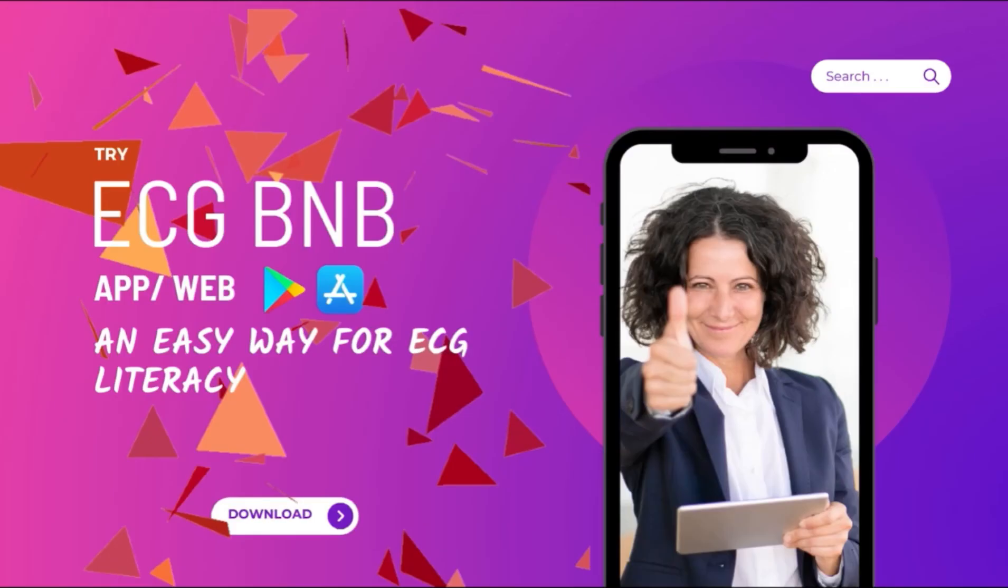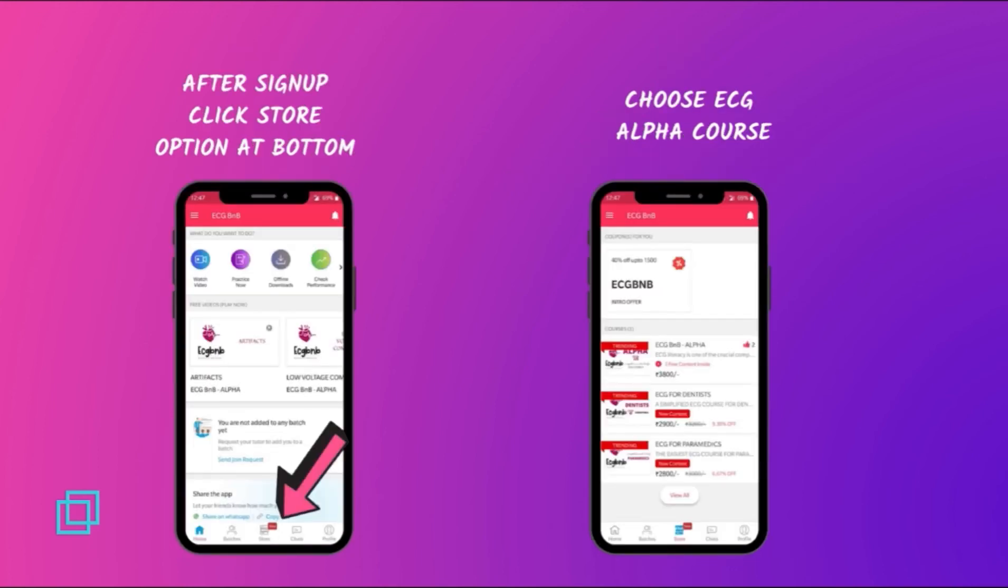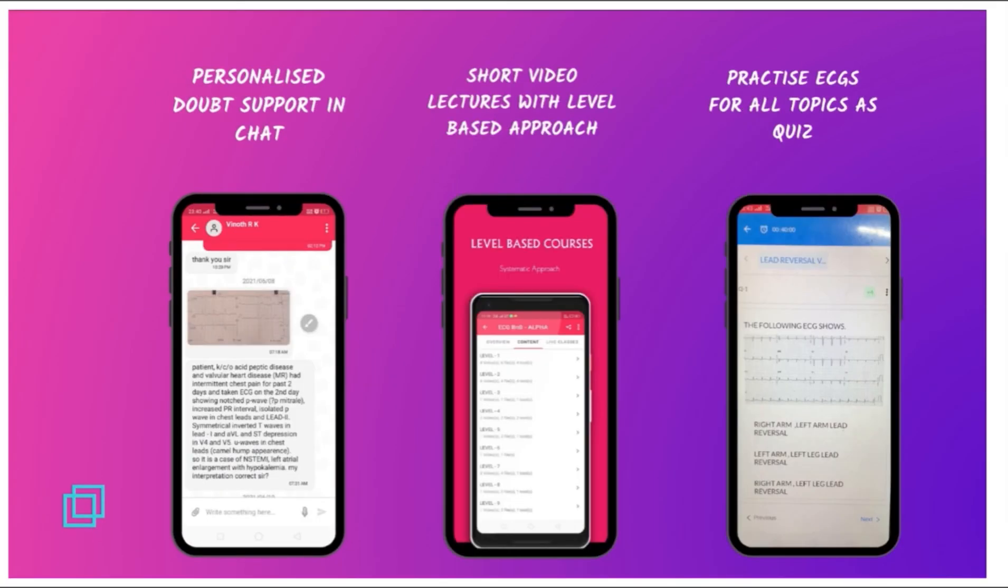In case you are a person who is interested in ECGs, you can check out our ECG BNB app, which is the easiest way for ECG literacy. This app is available both for Android as well as iOS users. For Android users, you can type the name ECG BNB in the Play Store and download the app. And for iOS users, you can download the Class Plus app and enter the organization code which is shown in the screen. Once you log in, you can find the course ECG Alpha which is present in the store section at the bottom. In this course, entire ECG content is broken down into levels and sub-levels. Each sub-level will contain an explanation video in short and crisp format followed by class notes for quick revision and practice ECGs to solve and relearn.